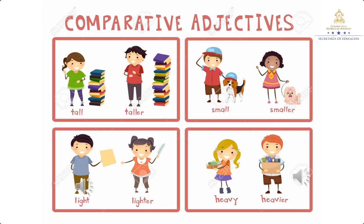So we can try to make some sentences, making a comparison between each illustration that we have here. Vamos a hacer algunas oraciones y comparaciones de cada ilustración. Vamos a tomar las primeras dos. So we can say, María and Juan. María is tall, but Juan is taller than María. María es alta, pero Juan es más alto que María.